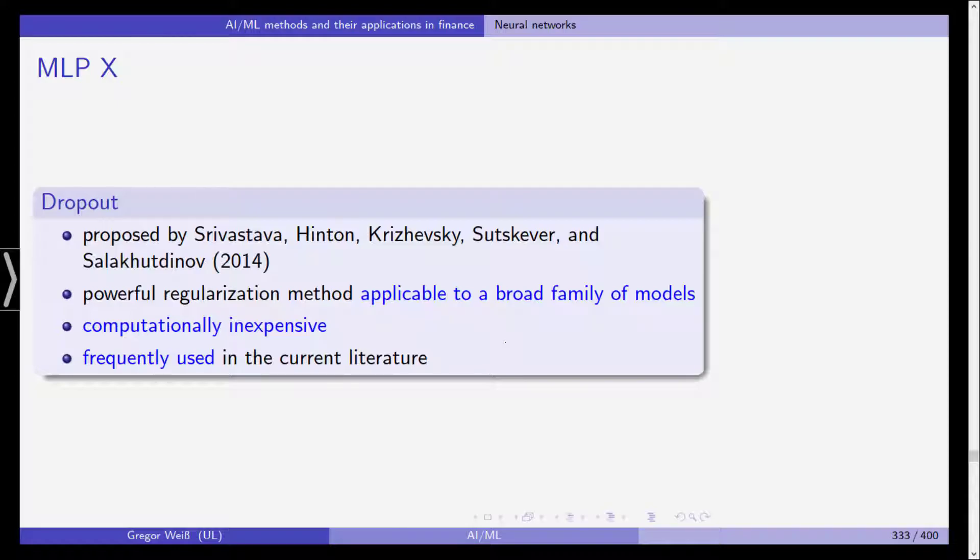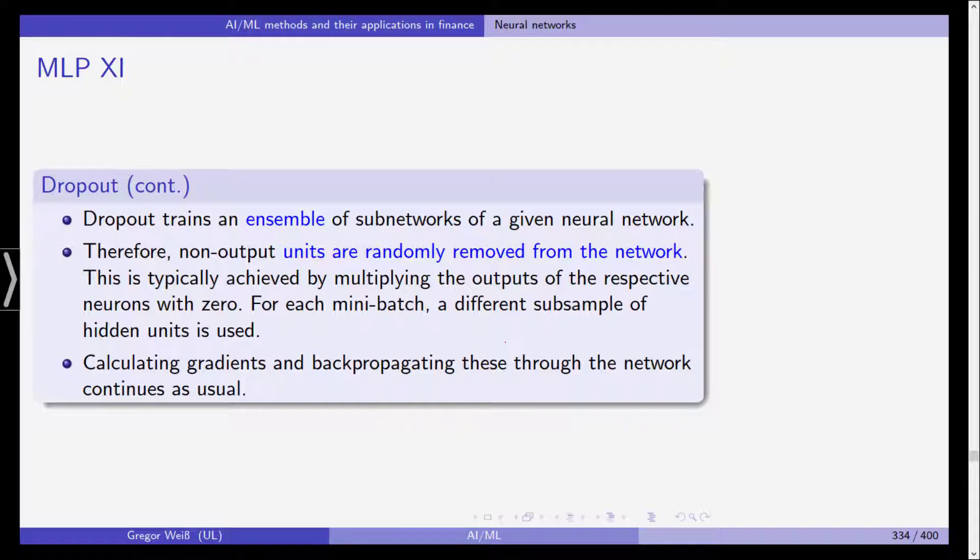What you do is dropout trains an ensemble of sub-networks of a given neural network with non-output units that are randomly removed from the network. This is typically achieved by multiplying the outputs of the respective neurons with a zero. For each mini-batch a different subsample of hidden units is used and then we calculate the gradients and do back propagation through these networks as usual.